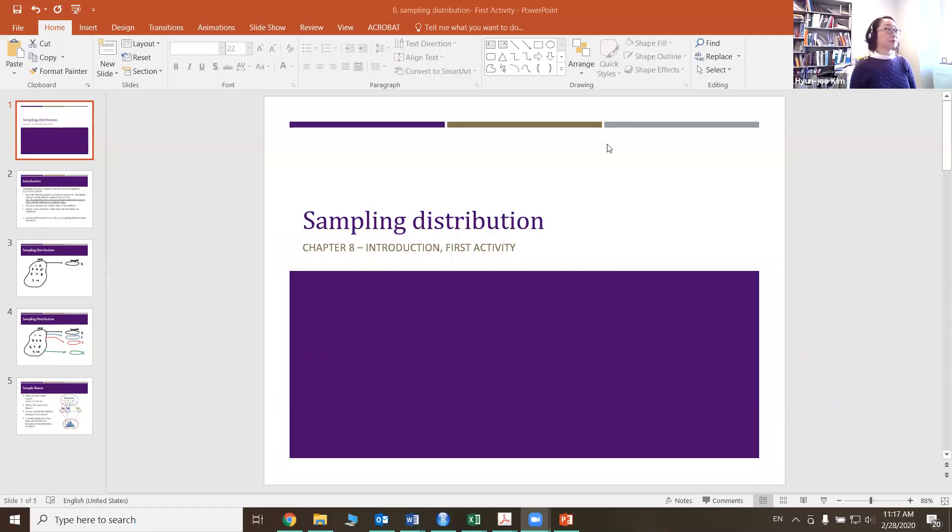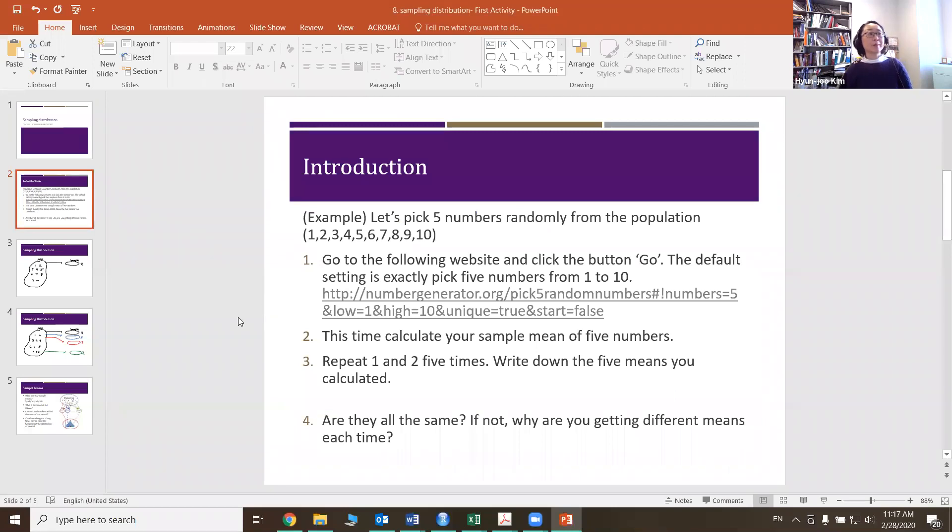So now I'm going to share. Okay, so this is my slide. Sampling distribution, Chapter 8 introduction, and we'll be talking about the first activity. For the activity we want to think about picking five numbers, five random numbers from population 1 to 10. There are different ways that you can actually do this. Several different computer softwares will let you do this pretty quickly as well.